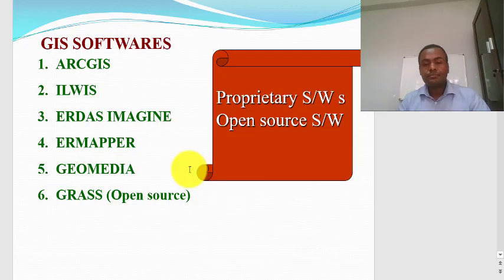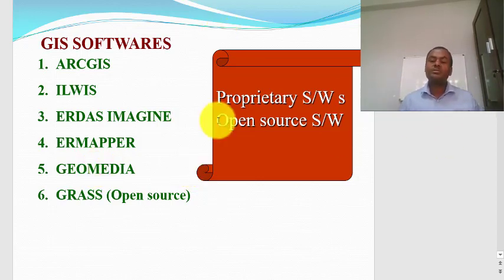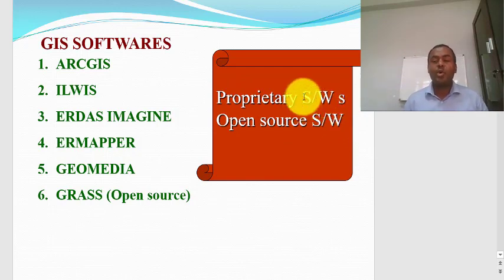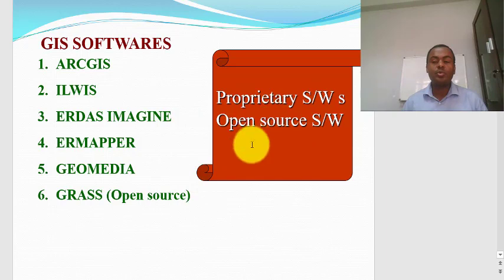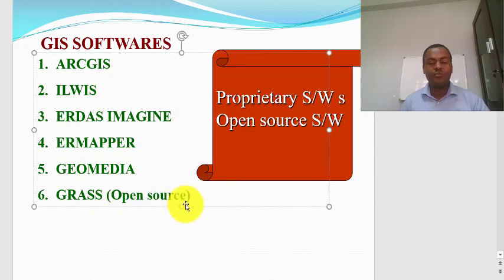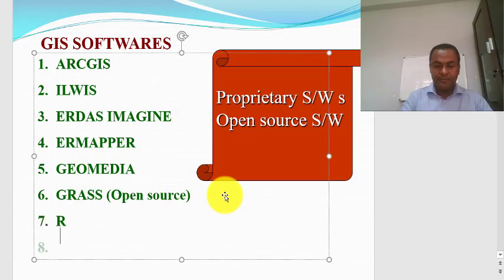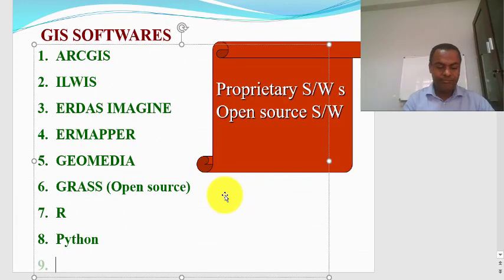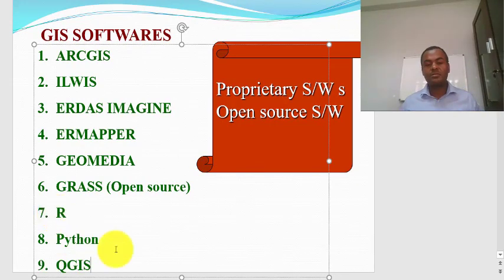These are the components of GIS. One of the components is software, and under software there are two issues: proprietary software and open source software. Proprietary software is most of the time commercial software. Open source software has source code that is open and can be freely used without purchasing. ArcGIS, ERDAS, ERMAPPER, and ENVIA are proprietary, while GRASS and ELVIS are open source. Other open source tools include R, Python, and QGIS.